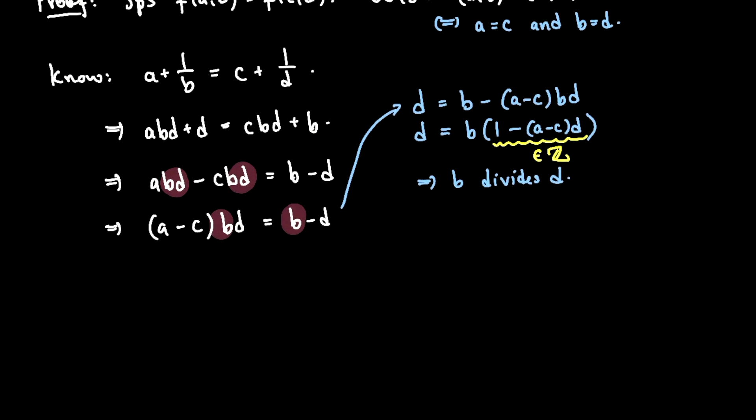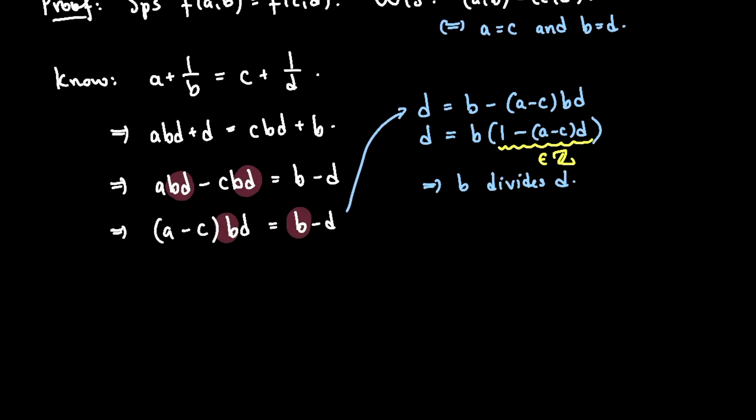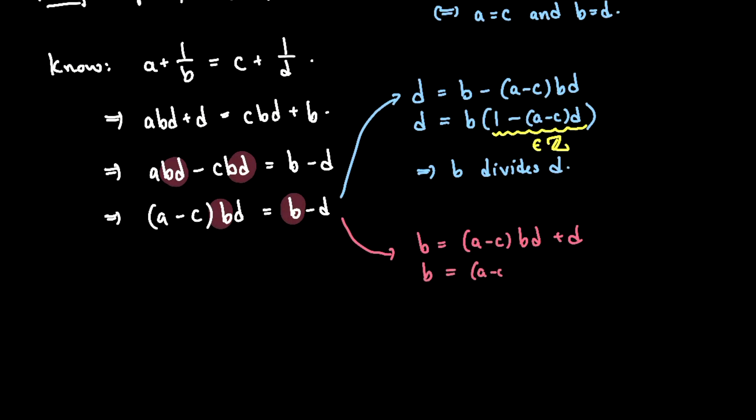That's one way to approach it. But another way is to do the same thing symmetrically. Instead of isolating d, why don't I isolate b instead? So I could say b equals a minus c bd plus d. And now let's factor out d. So b equals a minus c times b plus 1 times d. And now I can make the same logic. Here's an integer. So I've proven here that b is a multiple of d. So that tells me that d divides b.